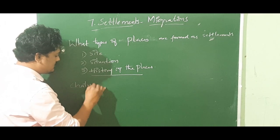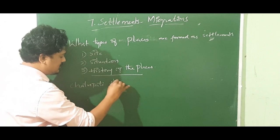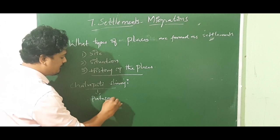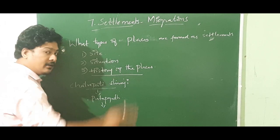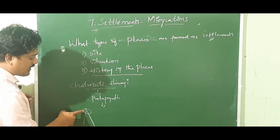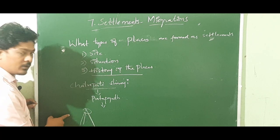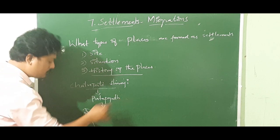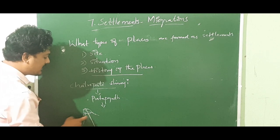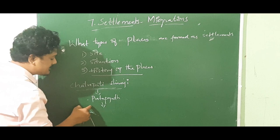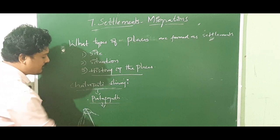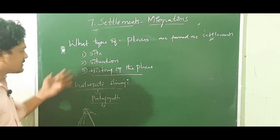For example, Chhatrapati Shivaji Maharaj lived in a place called Pratapgad. This area is at a very high altitude — he constructed his palace on a mountain. That is why the history of the place plays a very important role. So this is all about the history of the place.